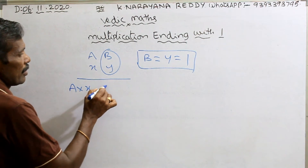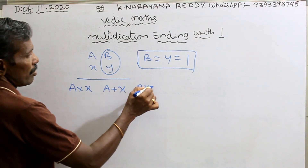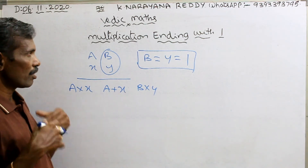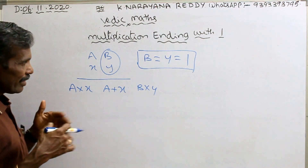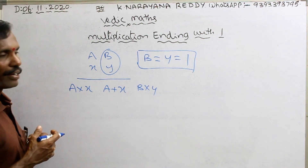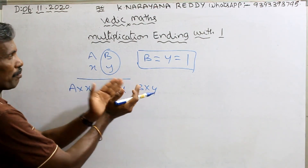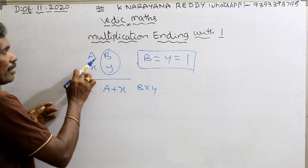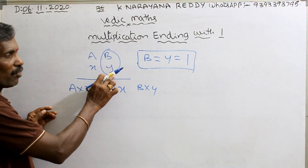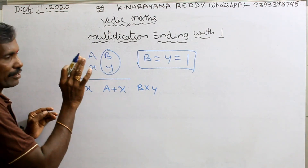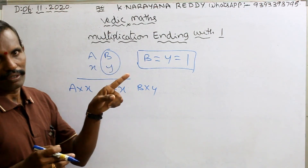These are different: b into x, a plus x, b into y — that's all. Reverse of starting with 1. Because in starting with 1, what happened? First multiplication, same addition, multiplication. But here the ending numbers are equal, that is 1, and the starting digits are different. So just reverse that of starting with 1. That's all.